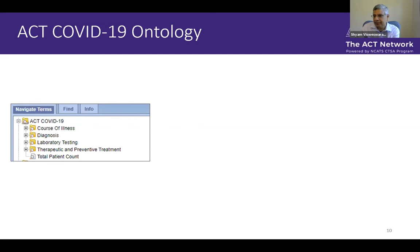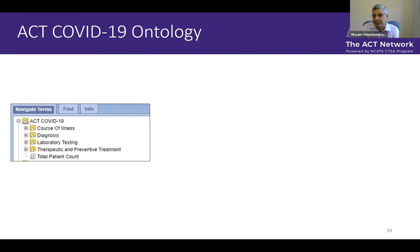At a very high level — this is actually from version three with some minor changes in version four — we have four high-level categories: course of illness, diagnosis, lab testing, and therapeutics. We also added a total patient count term to provide a way for people to get a denominator. Often when people are querying these terms, they want to know the total number of patients across the network. In the COVID ontology we have a single approach, which just looks at the number of patients loaded at each I2B2 repository.